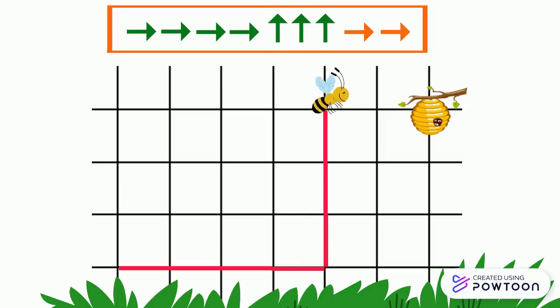And finally the bee should move twice to the right. 1, 2. So now the bee has arrived to its hive.